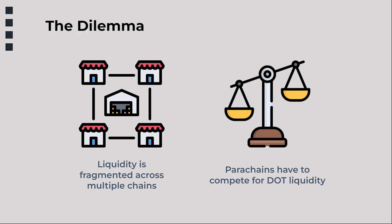Now, while liquid staked DOT provides the user with increased utility, all of these competing versions also present some problems. First and foremost, liquidity is highly fragmented and siloed within the specific parachain. And secondly, chains often have to compete for the same DOT liquidity.